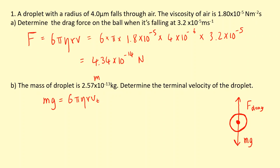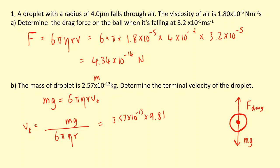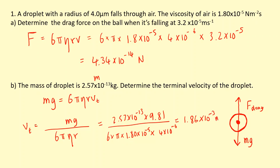The equation for terminal velocity is mg = 6π eta r v_t. Rearranging for terminal velocity gives v_t = mg / (6π eta r). Substituting the numbers: (2.57×10⁻¹³ × 9.81) / (6 × π × 1.8×10⁻⁵ × 4×10⁻⁶), which gives 1.86×10⁻³ metres per second — just over a millimetre per second.